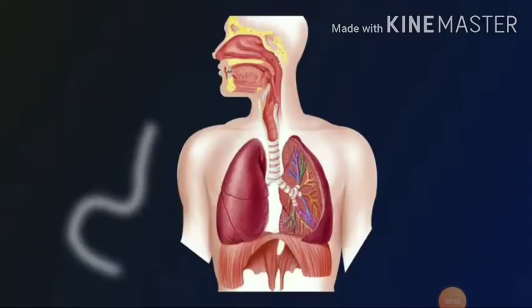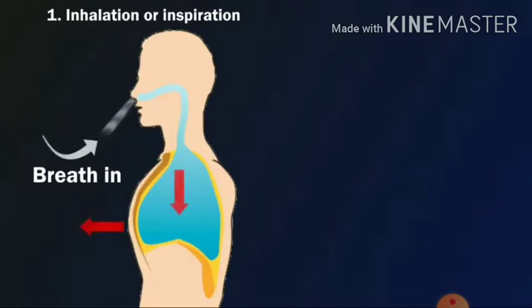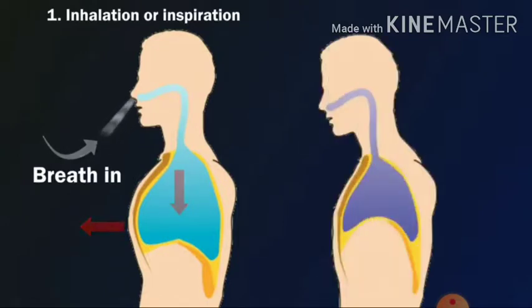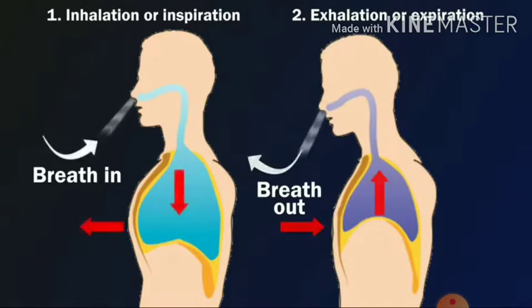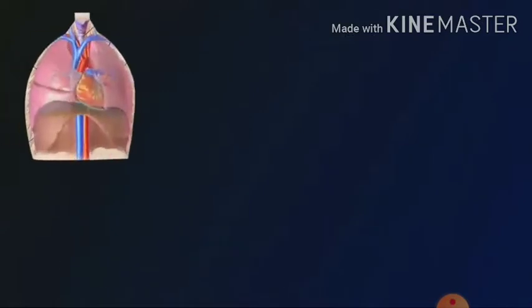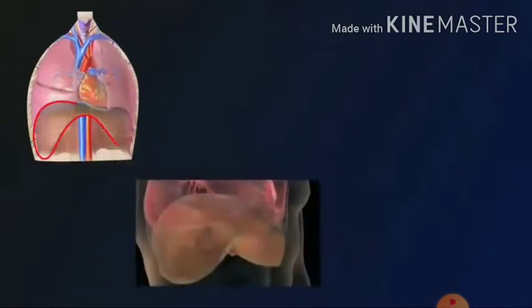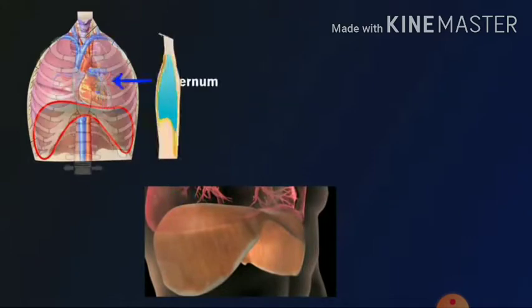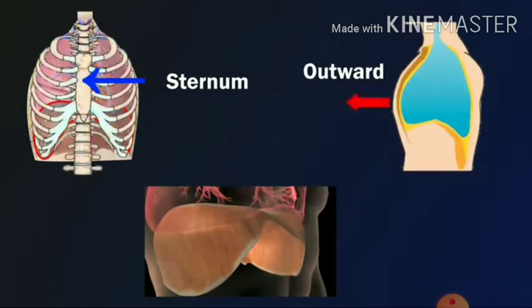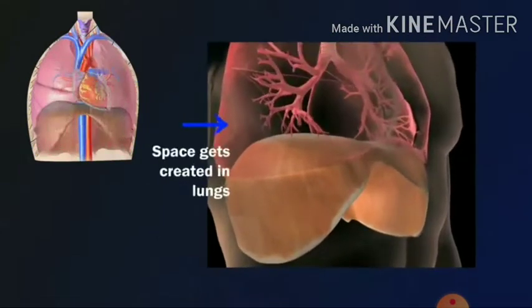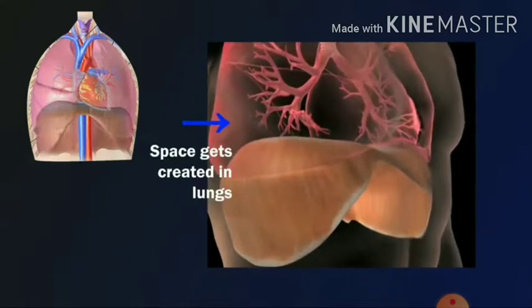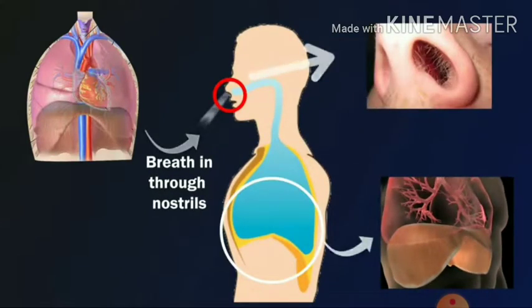Breathing mechanism: we take oxygen through the nose. When the breathing process occurs, two processes happen. First is breathe in, which we call inhalation or inspiration. Second is breathe out, which we call exhalation or expiration. When breathing occurs, two things are involved: the rib cage and the diaphragm. When we breathe in, our diaphragm moves outward, creating space in the lungs.